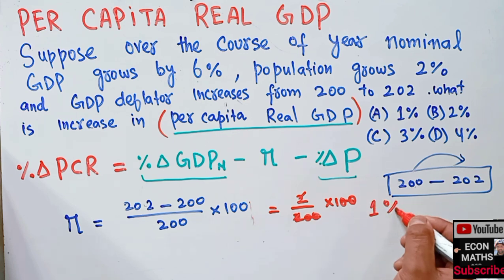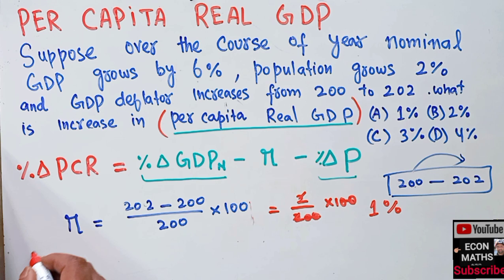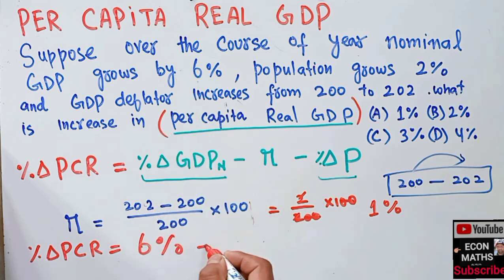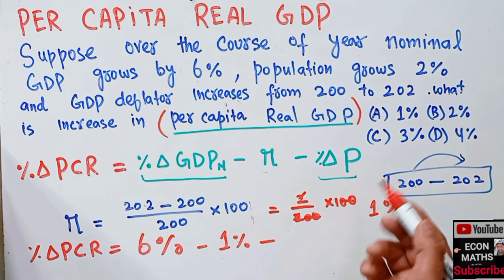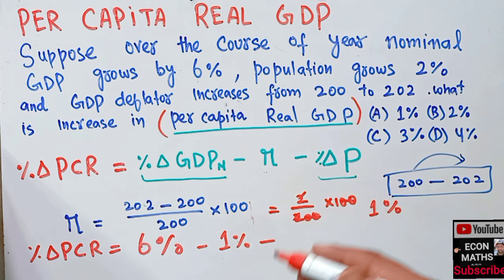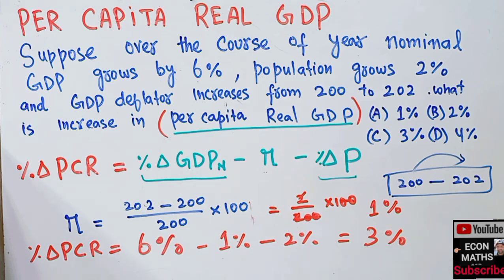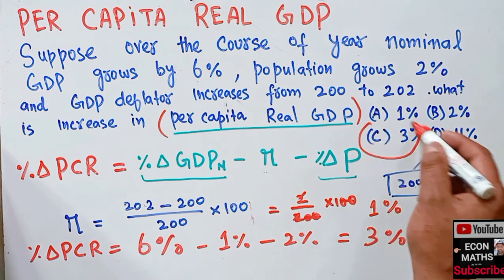So the inflation rate is 1%. Therefore, the percentage change in per capita real GDP equals 6% (nominal GDP growth) minus 1% (inflation rate) minus 2% (population growth rate), which comes out to 3%. So the increase in per capita real GDP is 3%.